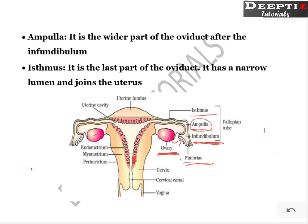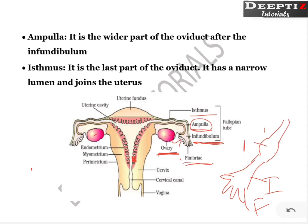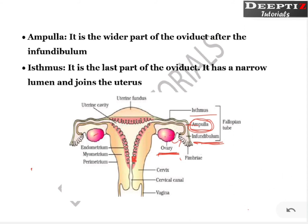The fallopian tube consists of mainly three parts: infundibulum, ampulla, and isthmus. The infundibulum is the funnel-like structure which receives the egg, which is in turn collected by the fimbriae. Then it passes to the region called ampulla — this swollen, slightly wider structure. In the ampulla, fertilization takes place. The male sperm which comes through the vagina has to reach here for fertilization.